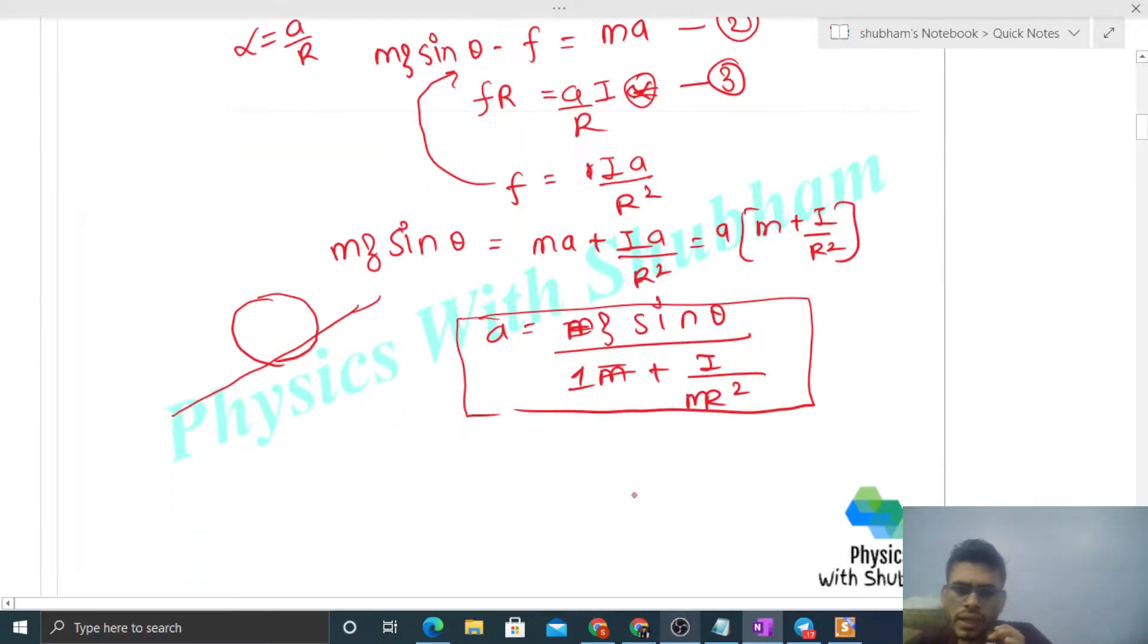Now for a solid sphere, I is 2 by 5 of mr squared. If you put this value, 2 by 5 mr squared, here, you will get g sin theta divided by 1 plus 2 by 5.